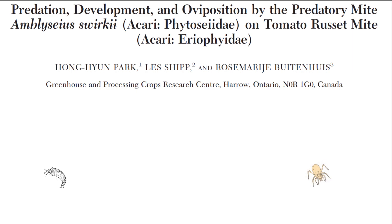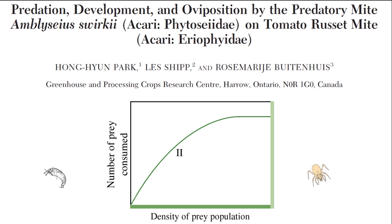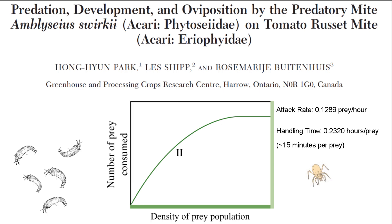Type 2 responses are common for biocontrol agents. As the density of prey increases, the kill rate of the predator slows. Because predators cannot process food and seek prey at the same time, one of the limiting factors for the attack rate is the handling time, or the time it takes for an individual to process a kill before the next kill can occur. The attack rate for swirskii was 0.1289 prey per hour, and handling time was 0.2320 hours per prey.